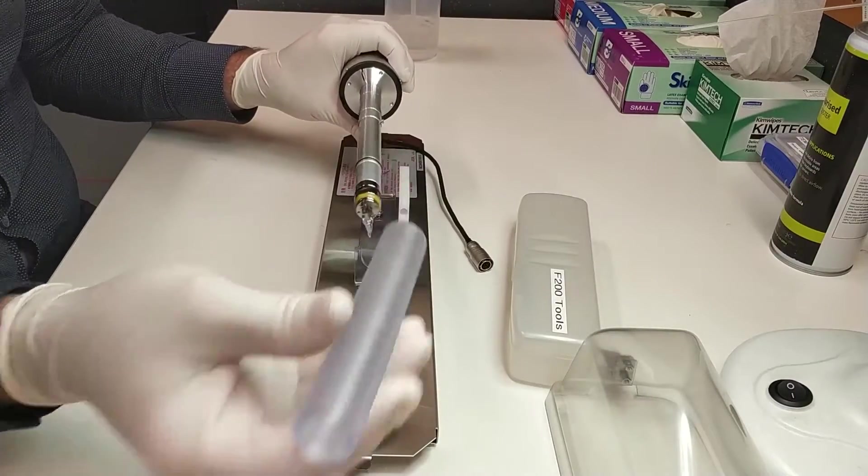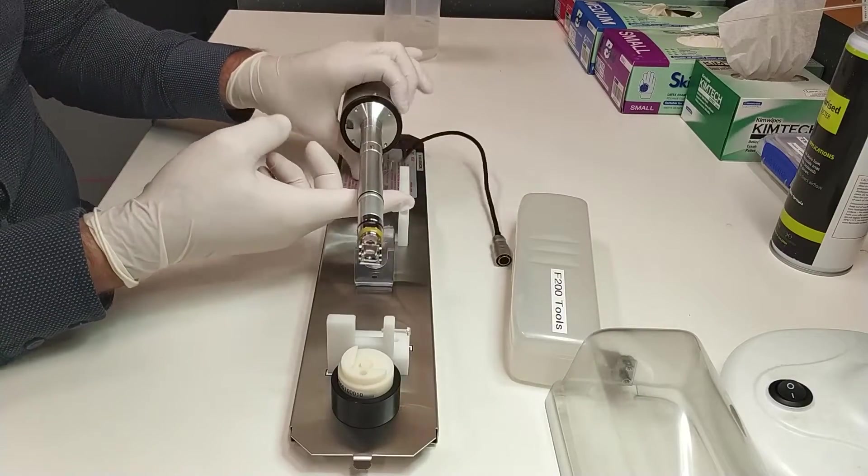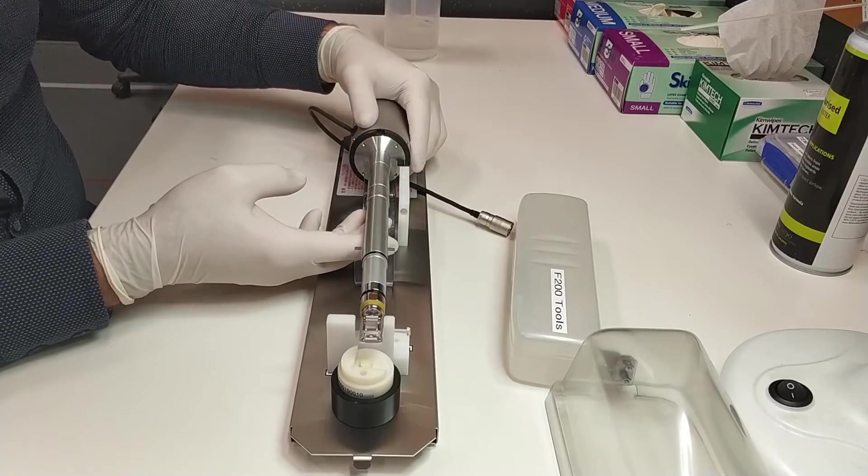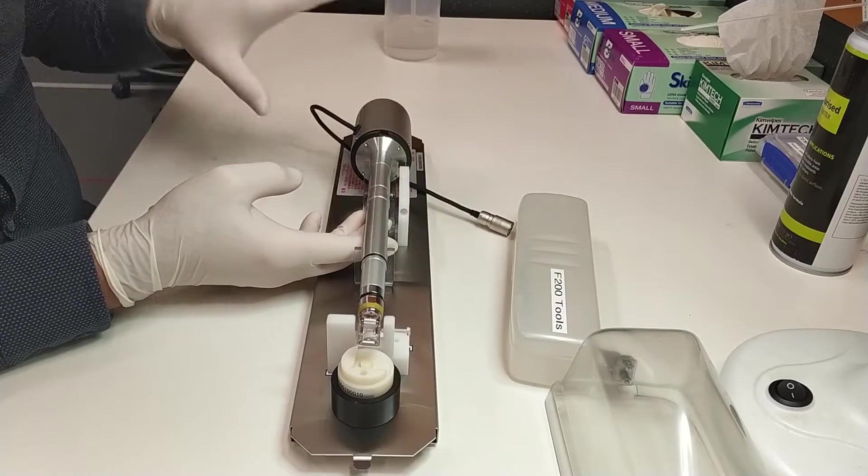Remove the tip cover by twisting and pulling. Gently rest the holder in the cradle. Place the heavy side with the handle first.